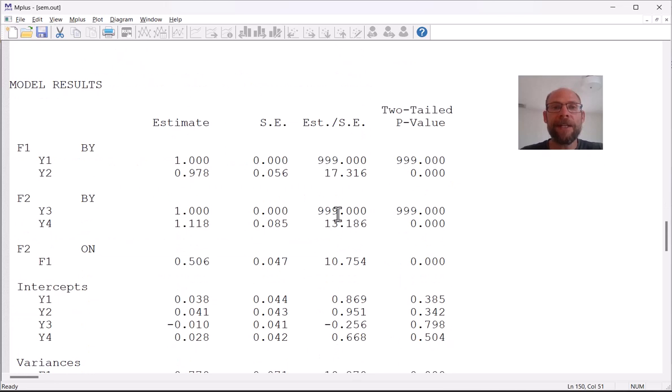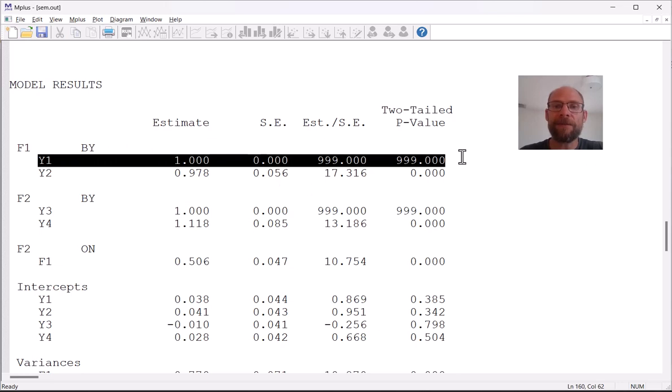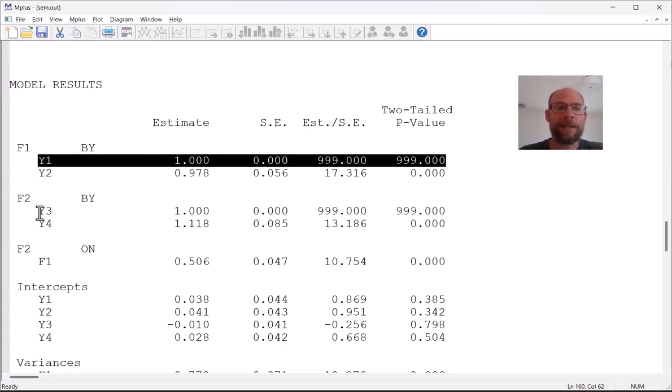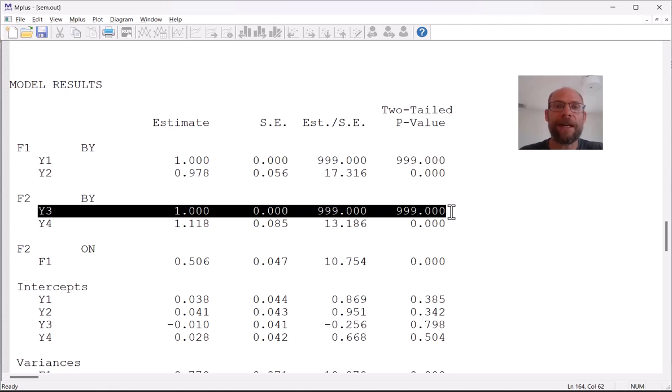Below, Mplus gives the unstandardized parameter estimates first under model results. So these are parameter estimates that are not standardized, that are in the raw metric of the variables. And you can see that the first loading on each factor is a fixed parameter. It's fixed to 1. So therefore it has no standard error and no p-value because this is a fixed parameter that needs to be fixed for identification. And the same is true here for y3 which also has a fixed loading of 1. And Mplus does this by default to identify the model.